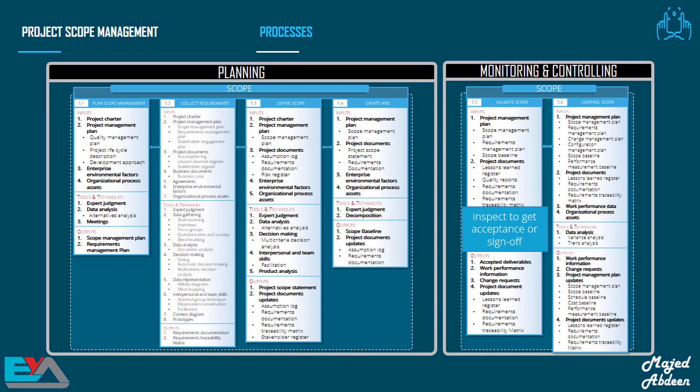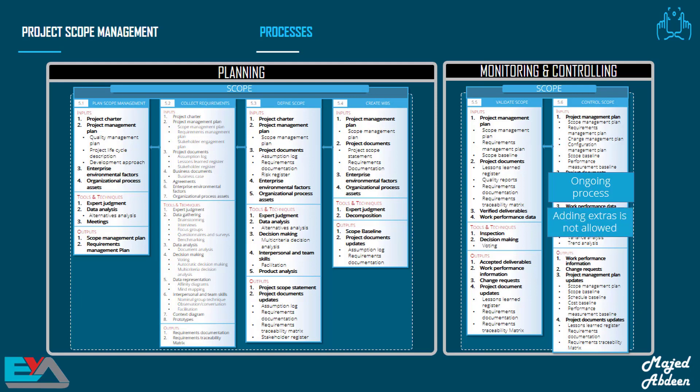During the Validate Scope process, you have to inspect the completed deliverables in order to get formal acceptance from your customer, the project sponsor, or any authorized stakeholder. You will get at least one or two questions in the PMP exam on this. By the way, we call this the sign-off process. The last process in this knowledge area is Control Scope. We always have to control the scope during the project — gold plating, which means adding extras, is not allowed. Scope Creep is the term we use to describe uncontrolled changes that make the team do extra work. You will get some questions in the exam on this too.